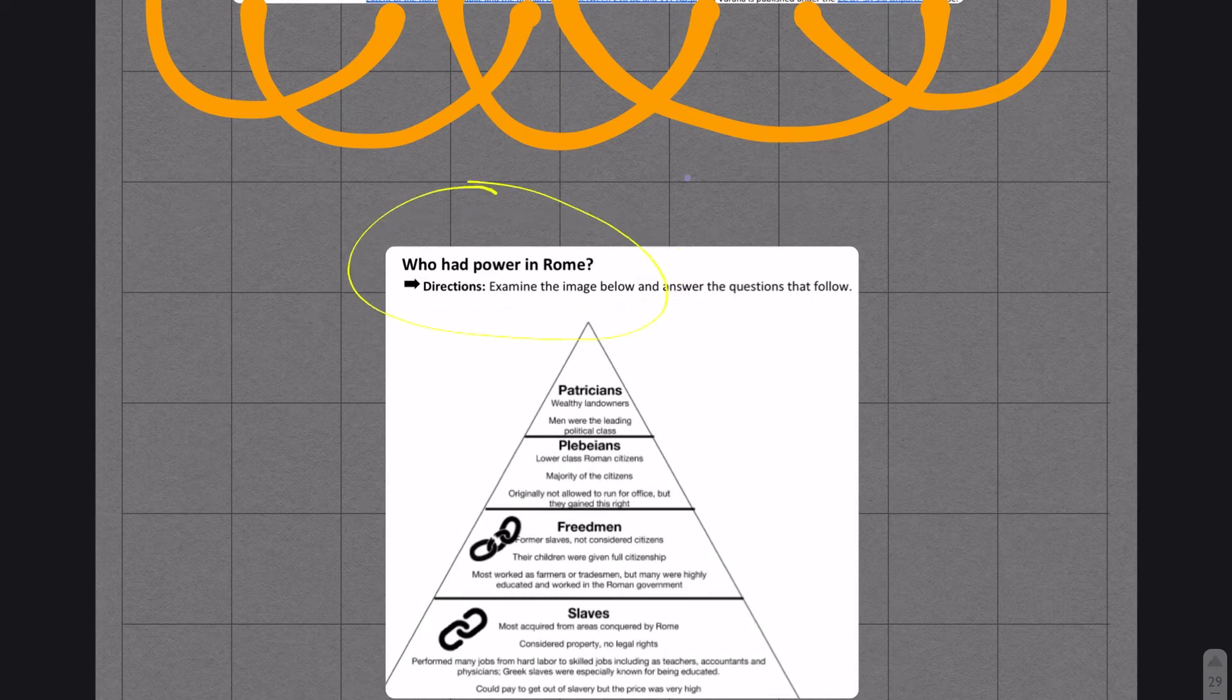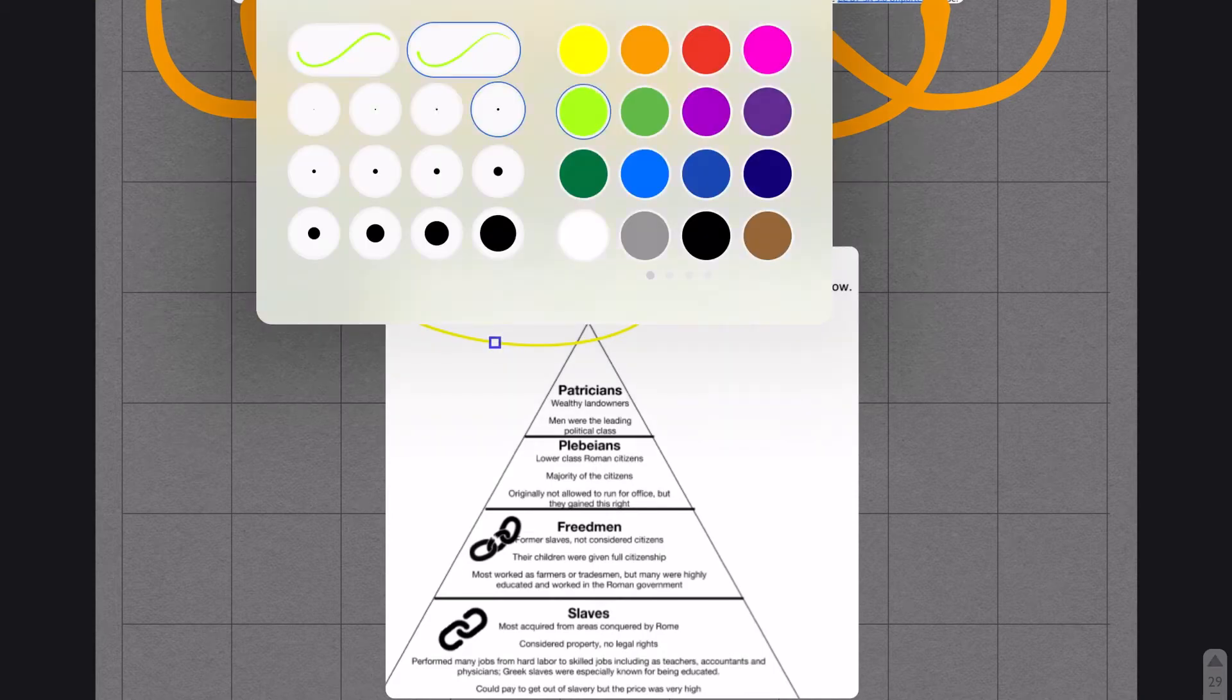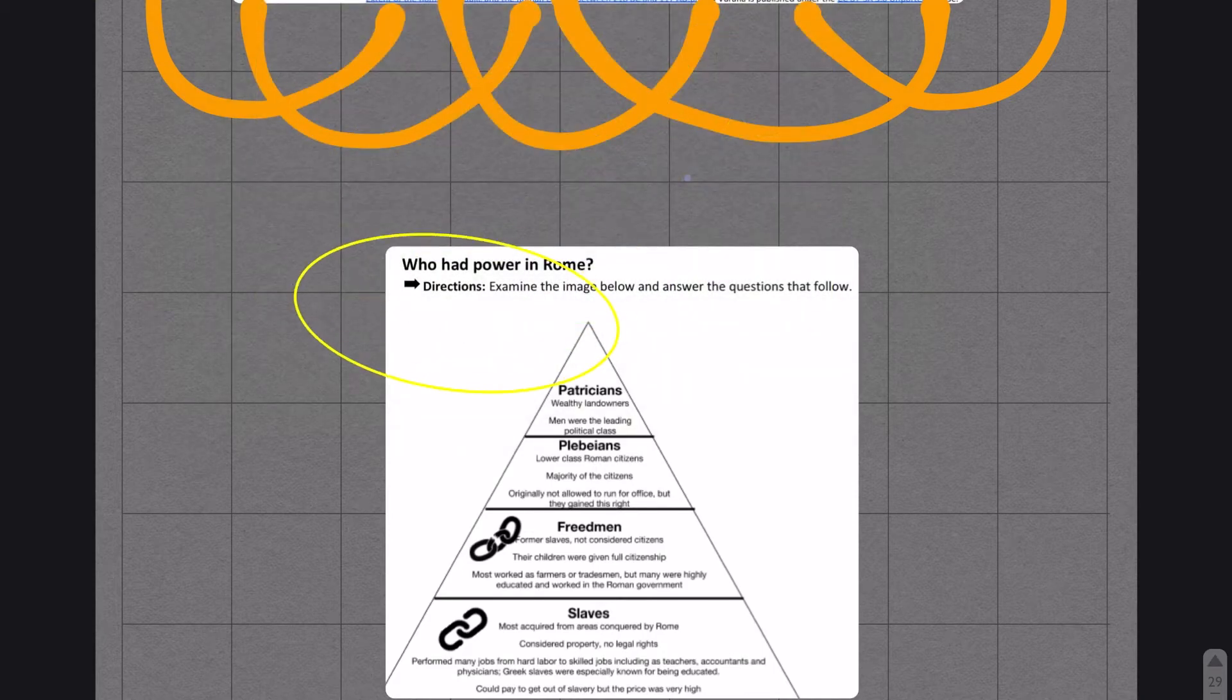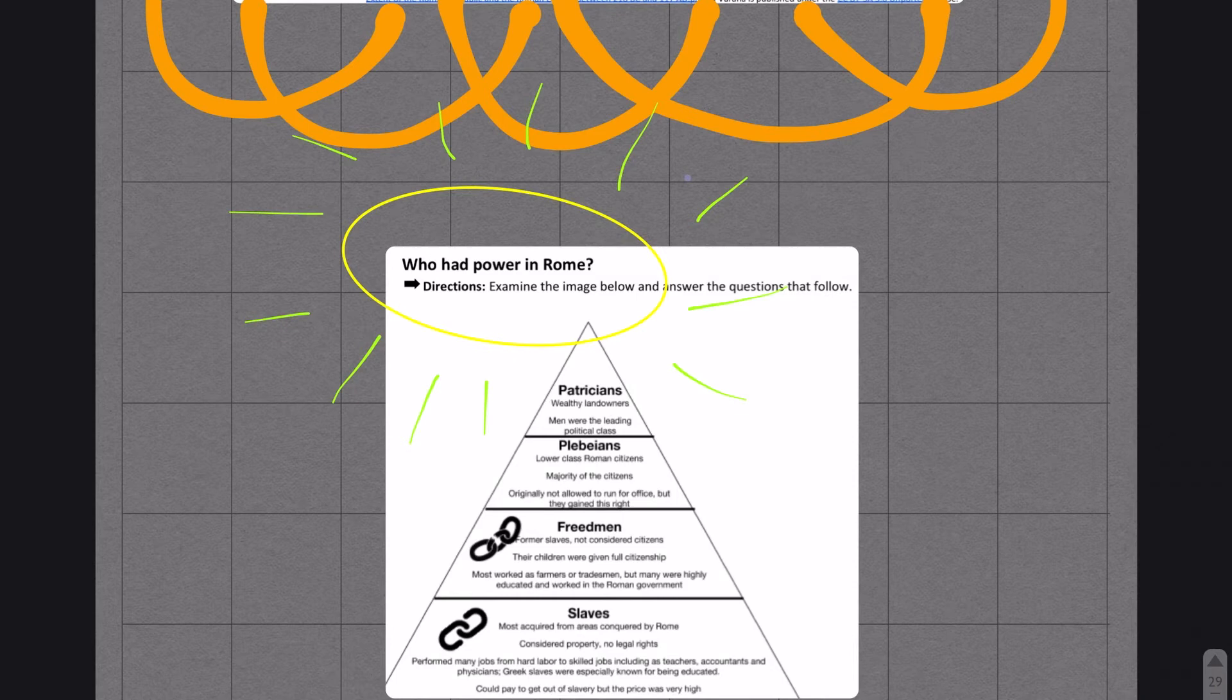I just want to emphasize that. I'm going to take my writing tool and I'm just going to circle that. That's very important. I'm going to make a nice circle there. Then I'm going to do my Bob Ross style. I'm going to emphasize who's got the power in Rome during this time period. The people we're looking at are the patricians on top, which are wealthy landowners.